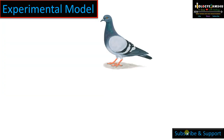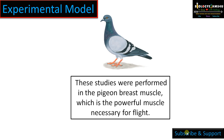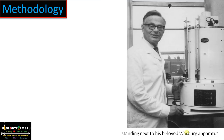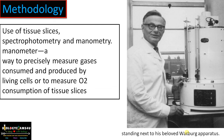The experimental model was pigeon breast muscle, which is a powerful muscle necessary for flight. At that time, many experiments on cellular respiration used this model. The methodology Krebs followed was tissue slices, spectrophotometry, and manometry. A manometer precisely measures gases consumed and produced by living cells. He learned this technique from his mentor, the famous enzymologist Otto Warburg, and he often credits Warburg's mentorship for all his accomplishments, including the discovery of the Krebs cycle. The main technique he used was manometry with the Warburg apparatus.